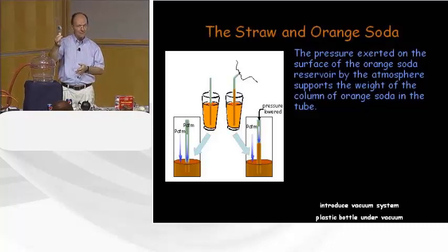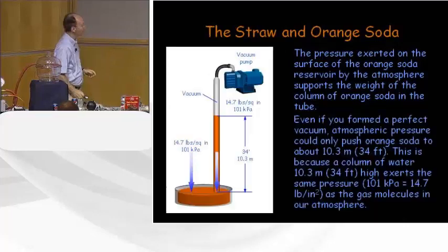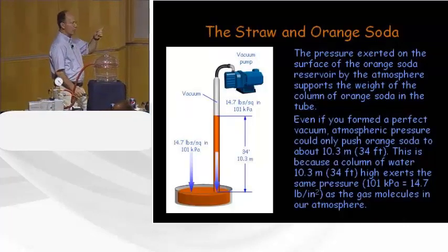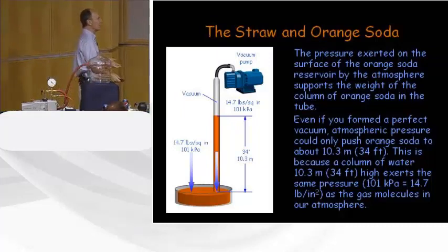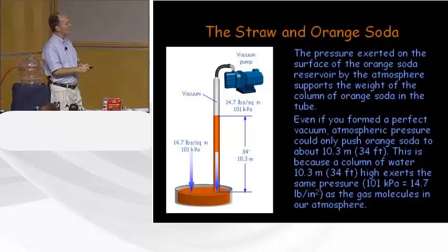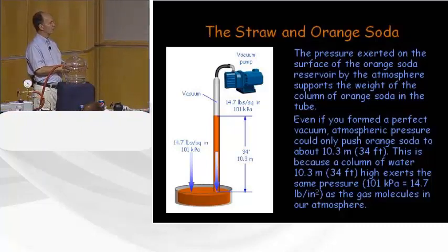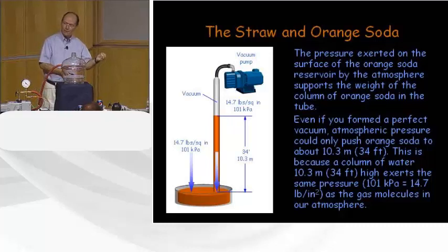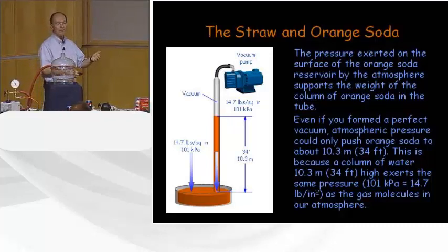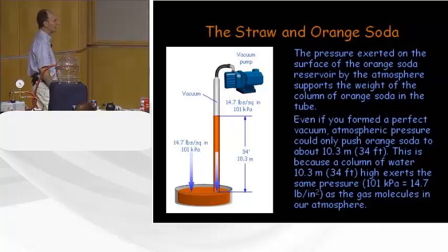If I did this in space with a vacuum around it already, nothing would happen because there's no force around the bottle. Even if I formed a perfect vacuum, atmospheric pressure can only push the orange soda to about 10 meters, 34 feet — because the column of water that high exerts the same pressure as the gas molecules in our atmosphere. That's why water pumps only work to about 10 meters.